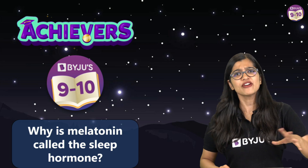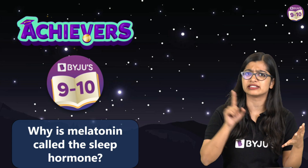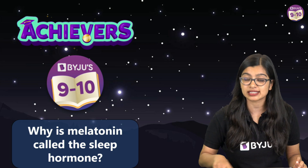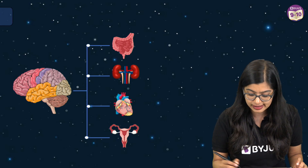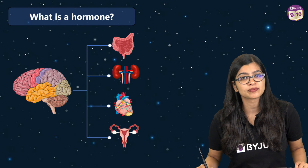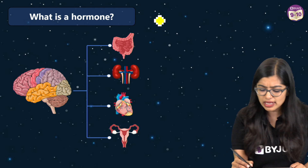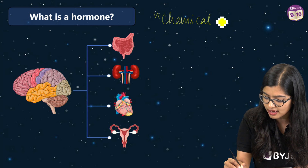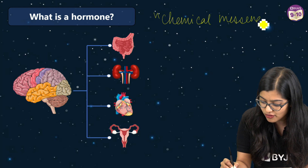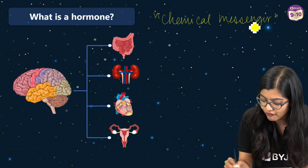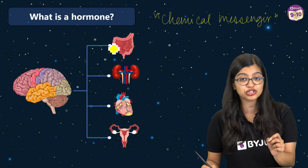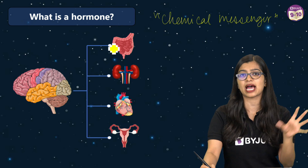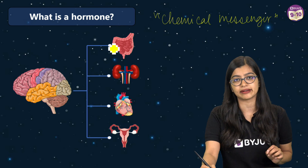Before I get into melatonin and the sleep hormone, we must first have a basic understanding of what hormones are. Hormones are nothing but chemical messengers that are responsible for carrying out chemical coordination in our body, where different activities that happen within our body are coordinated.